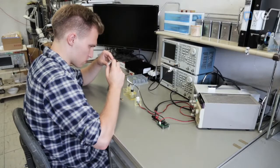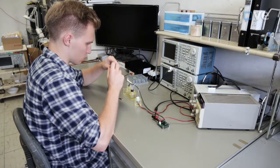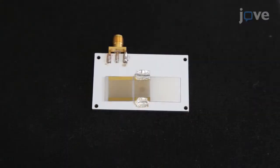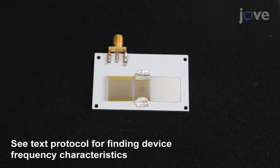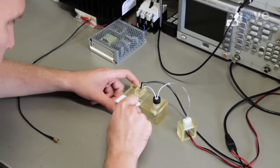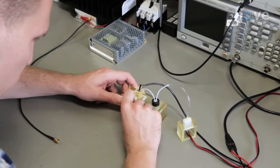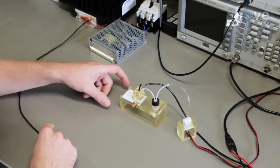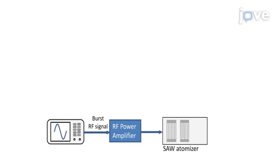Prepare the SAW device for the experiment. Mount it on an aluminum printed circuit board using aluminum foil and conductive paste. Next, mount the circuit board with the device onto a platform.